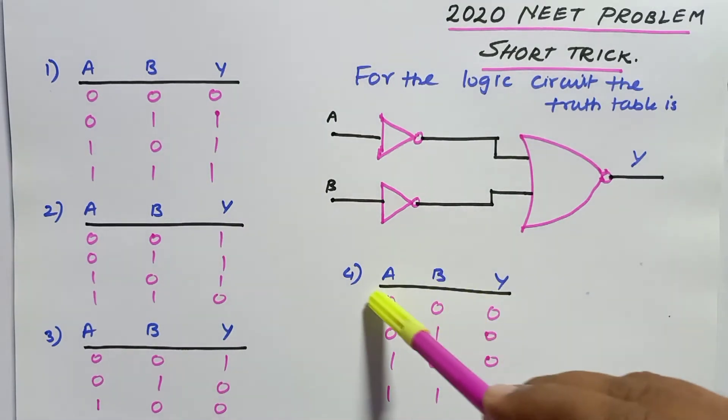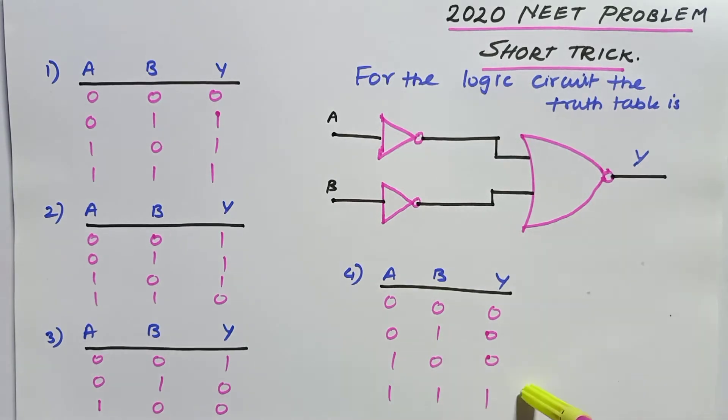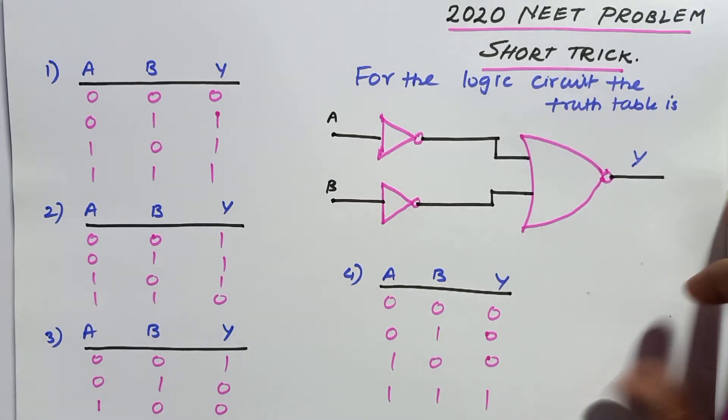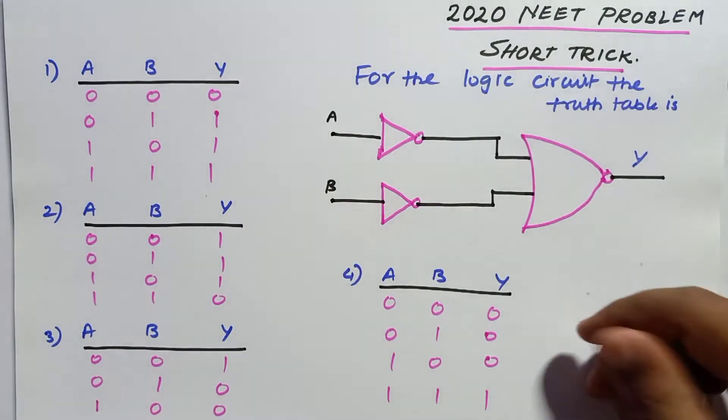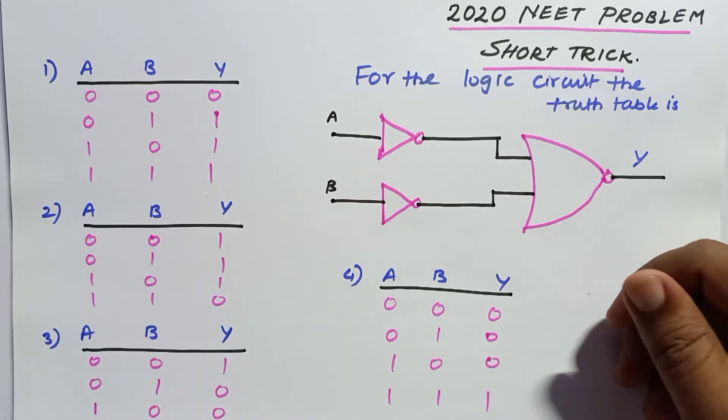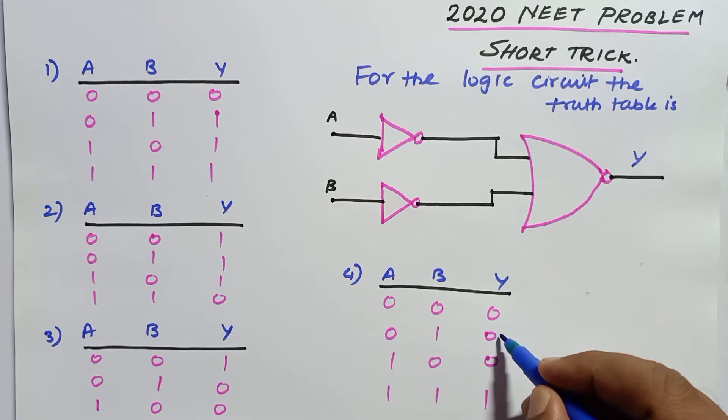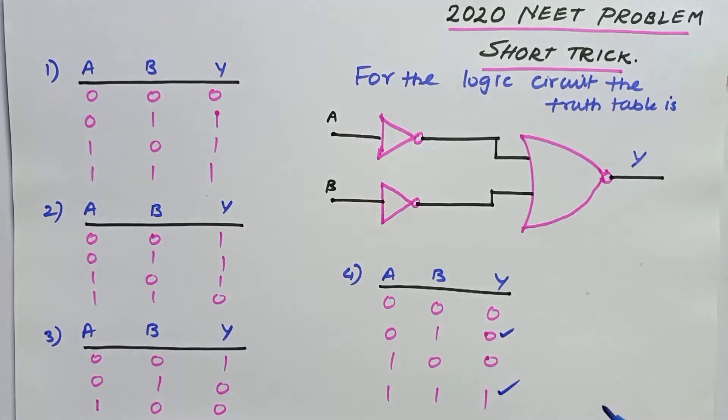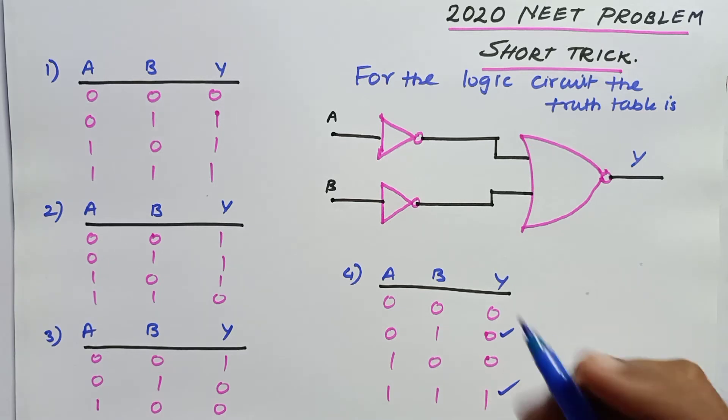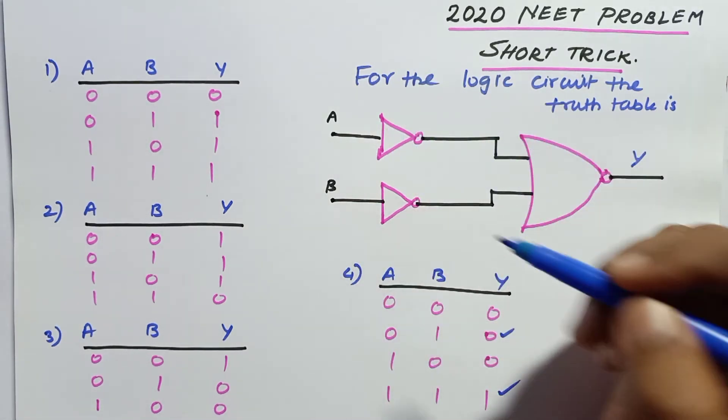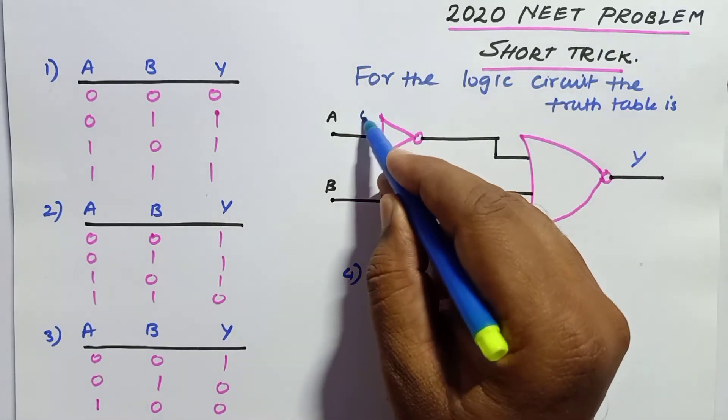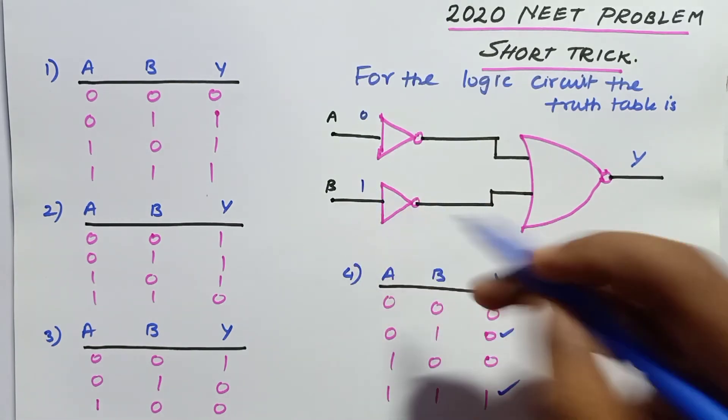Let me tell you how this works. For example, if you test this case and this case, that's more than enough - no need to test all four cases. I'll give you a small clue here. For example, this is 0 and this is 1.